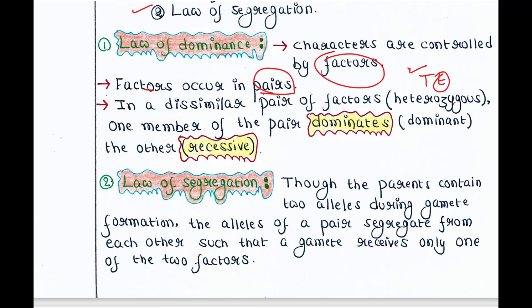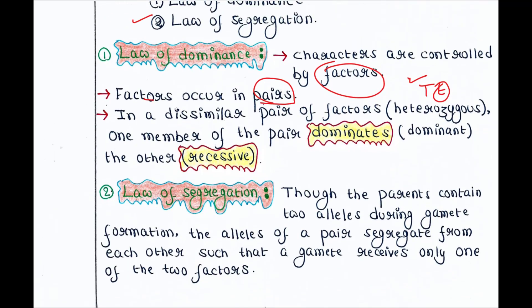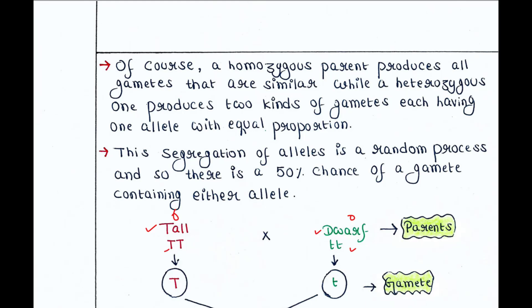The next law is the law of segregation. Though the parents contain two alleles — either TT, tt, or Tt — during gamete formation, the alleles of a pair segregate from each other such that a gamete receives only one of the two factors. This is because gametes are haploid, and hence each gamete contains only one allele.